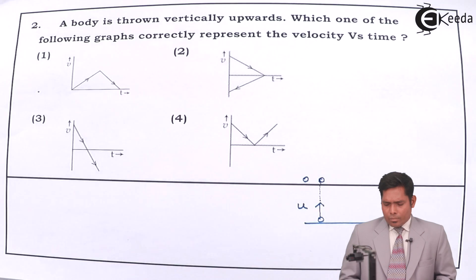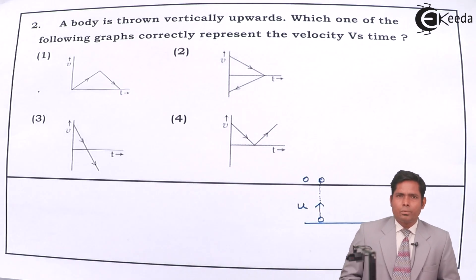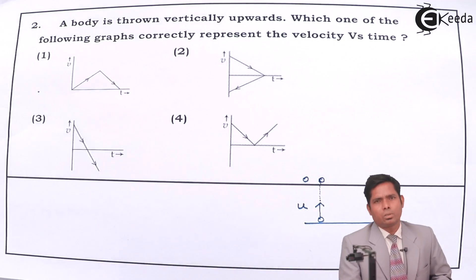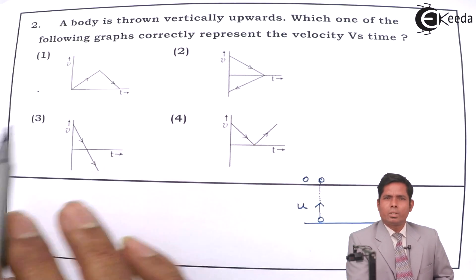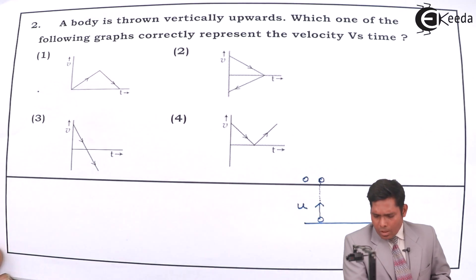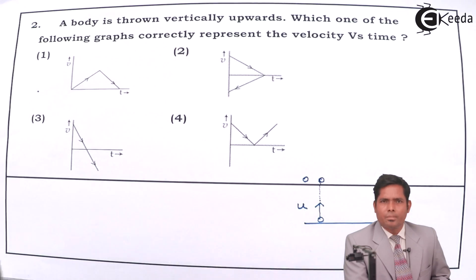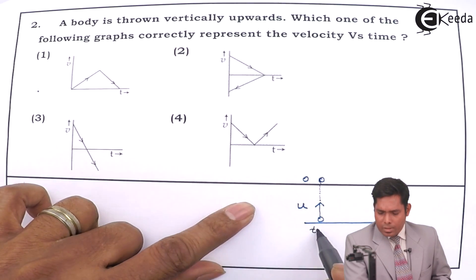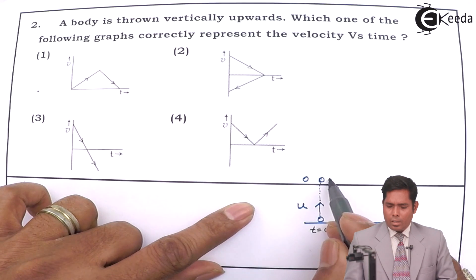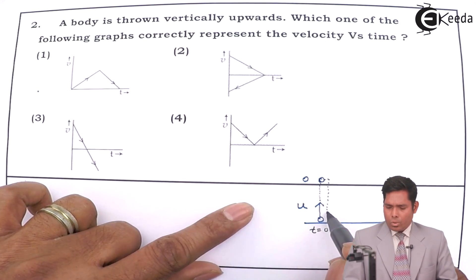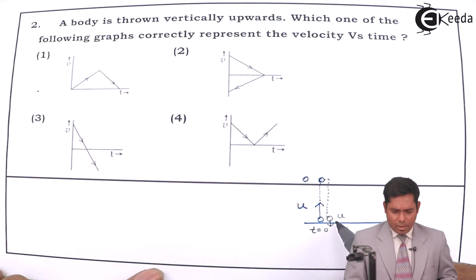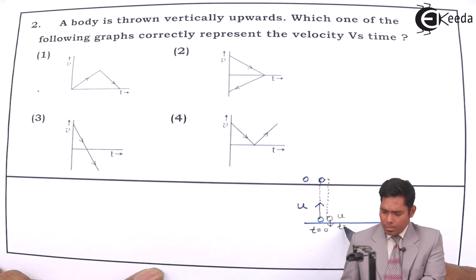I can solve this with the help of equations or without equations also. Let us solve with the help of equations first, then we will explain without equations. We have to plot the graph of velocity versus time — velocity is taken in the y-direction and time on the x-axis. Time t equals zero starts from here.